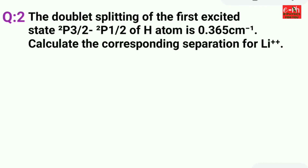Now we will discuss the second problem. The doublet splitting of the first excited state 2p₃/₂ to 2p₁/₂ of hydrogen atom is 0.365 cm⁻¹. Calculate the corresponding separation for Li⁺⁺.